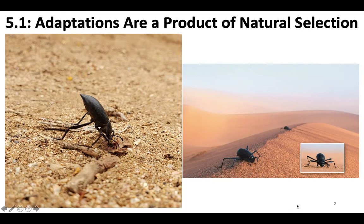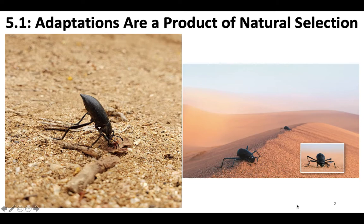Let's start from the very beginning and define a few terms before we get into the nitty-gritty of the intersection between ecology and evolution — not really even an intersection, because the two are so integrally linked. You can't have one without the other. Natural selection is the differential success of individuals within the population that results from their interaction with the environment — differential success includes survival and reproduction.